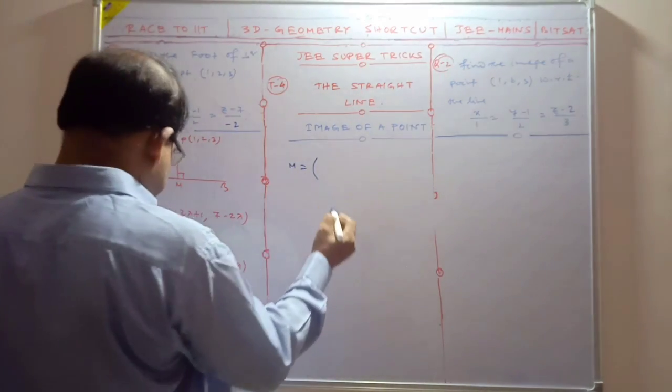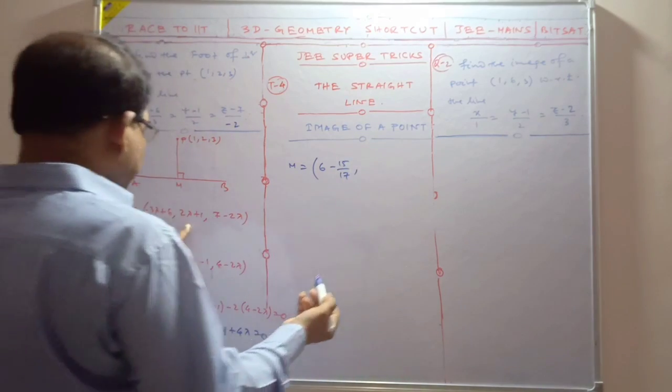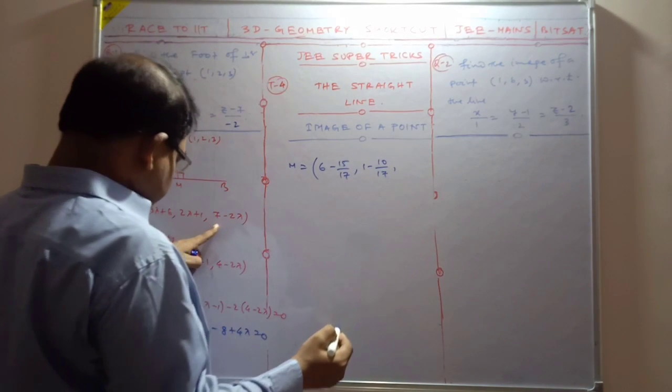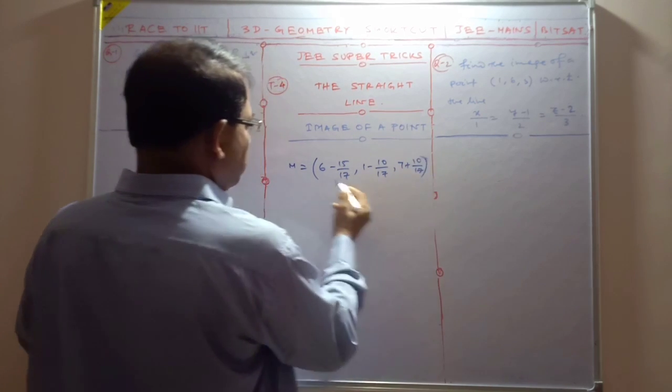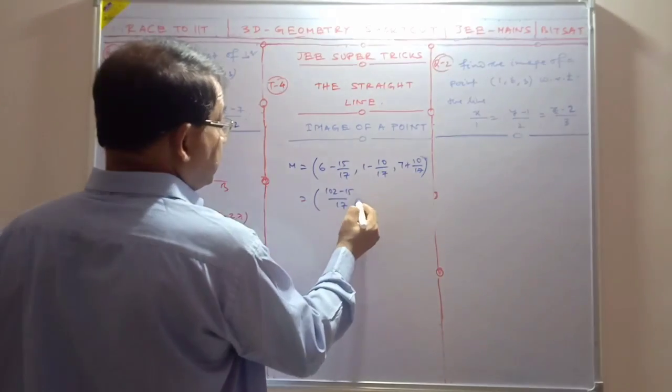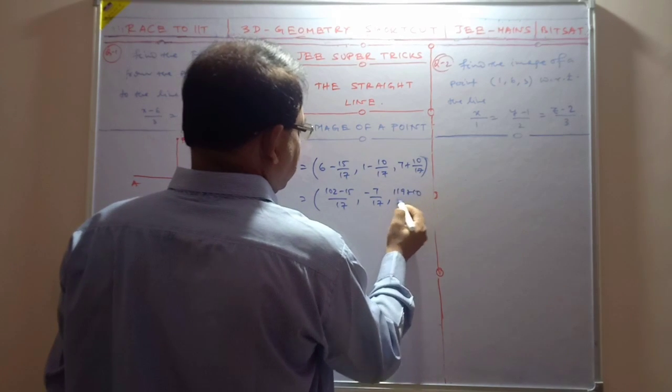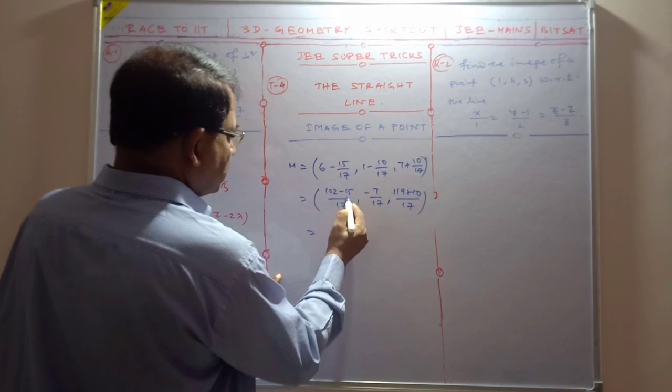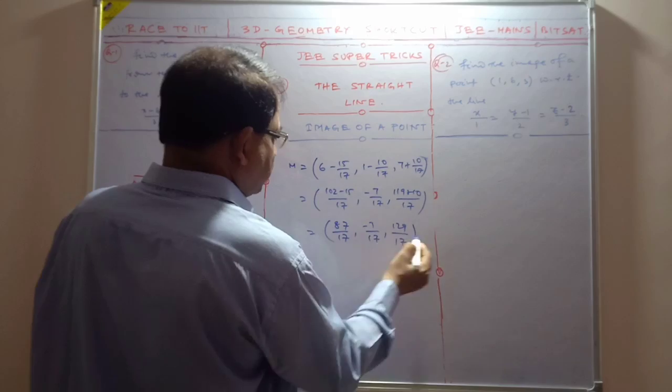This gives 6 minus 3 lambda equals 15 by 17, and 1 minus 2 lambda where 2 lambda is 10 by 17, and 7 minus 2 lambda equals 10 by 17. So this is minus 17 by 17, then 26 by 17, and 129 by 17.